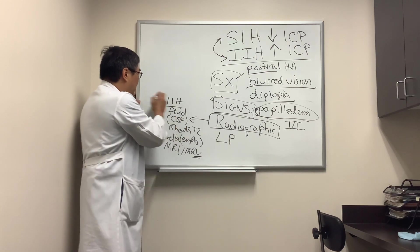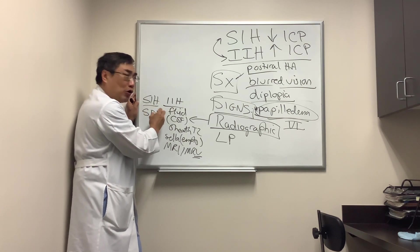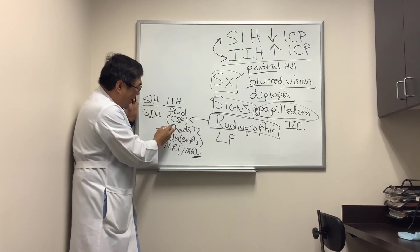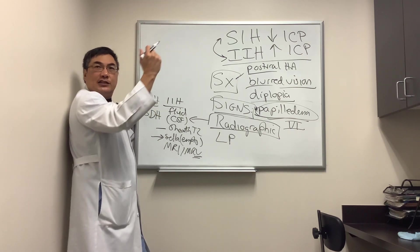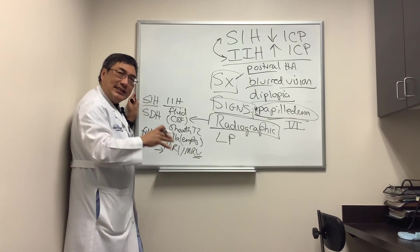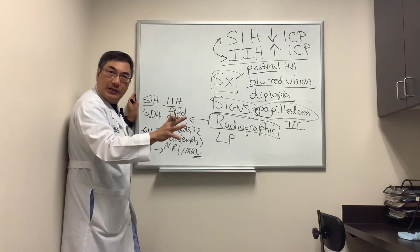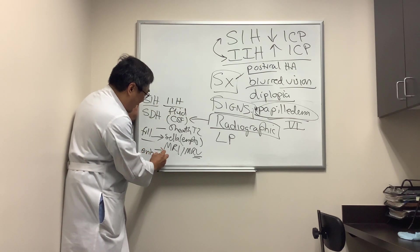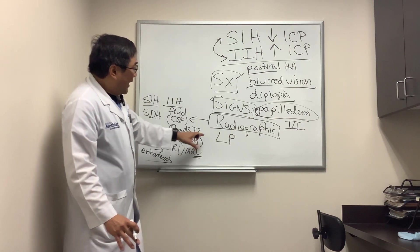In SIH, where the pressure is low, you have fluid but not in the sheath. Instead, the fluid is a subdural hygroma, subdural fluid, or subdural hematoma if you break a bridging vein. In the sella, it's going to be a full sella because venous engorgement in the pituitary will make it full — full rather than empty. And as opposed to venous sinus stenosis, the fullness in the venous sinuses and veins is going to cause pachymeningeal enhancement, so there will be diffuse pachymeningeal enhancement in SIH.